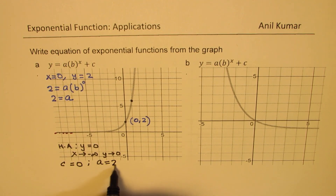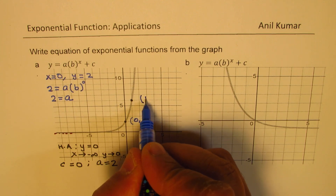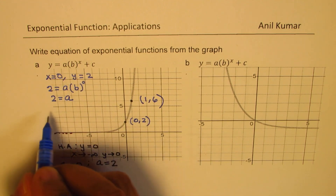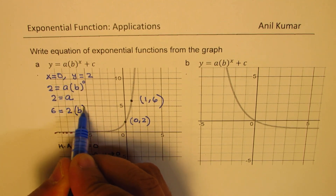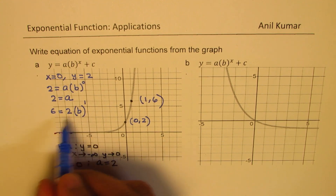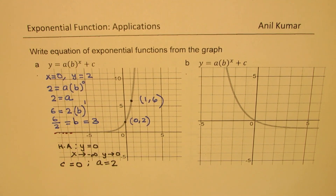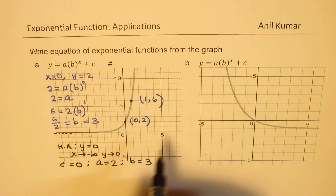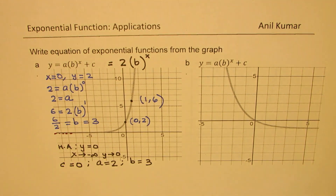Now to find the value of b we use the other point, which is (1, 6). Substituting x equals 1 and y equals 6, with a equals 2 and c equals 0, we get 6 equals 2 times b to the power of 1. So 6 divided by 2 gives b equals 3. The equation for part A is y equals 2 times 3 to the power of x.